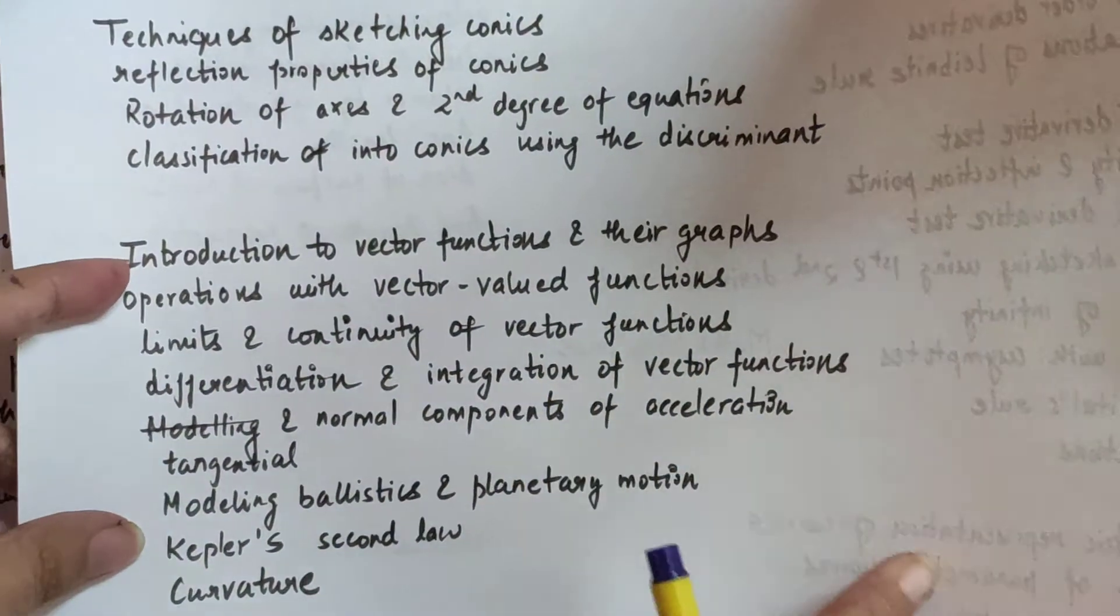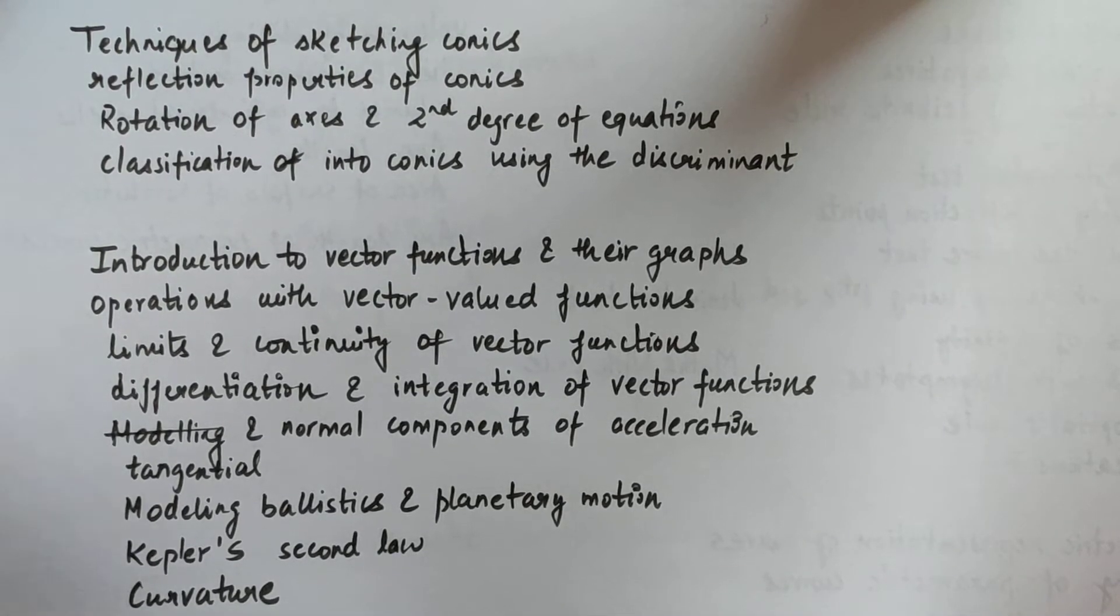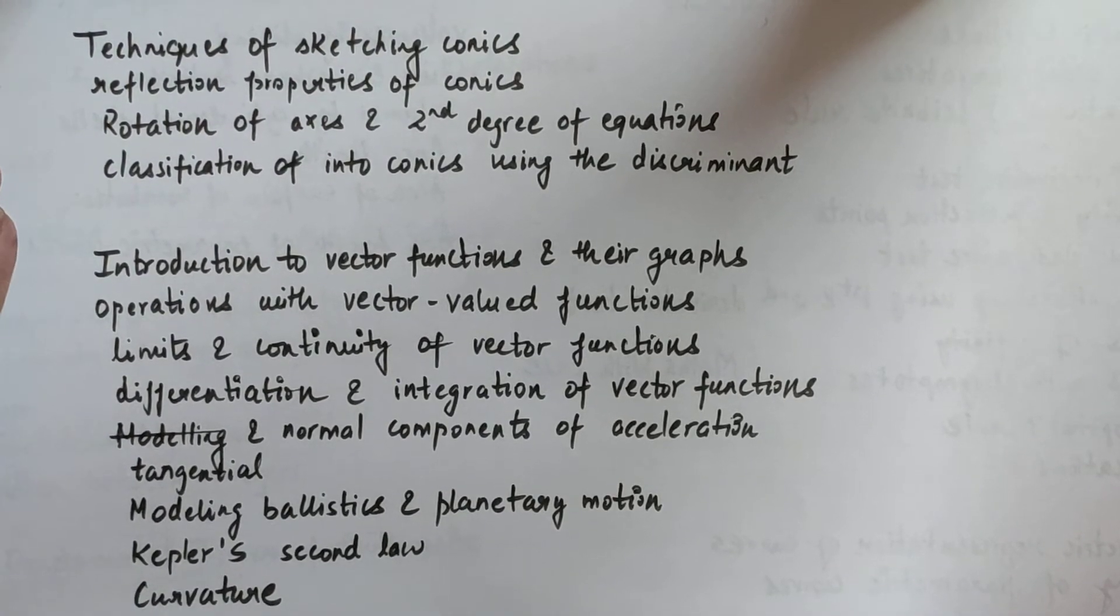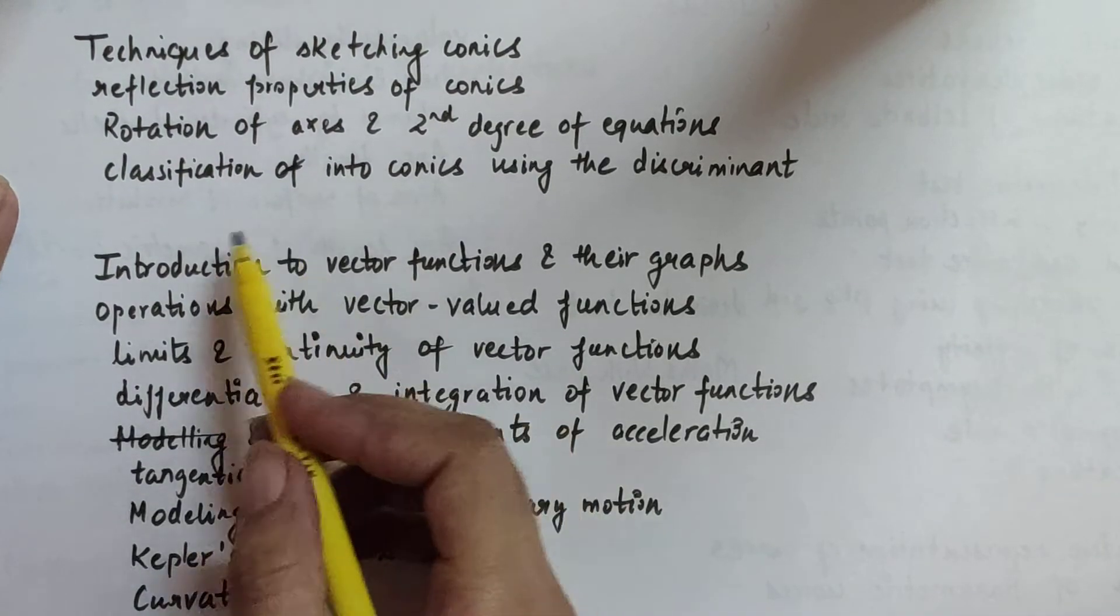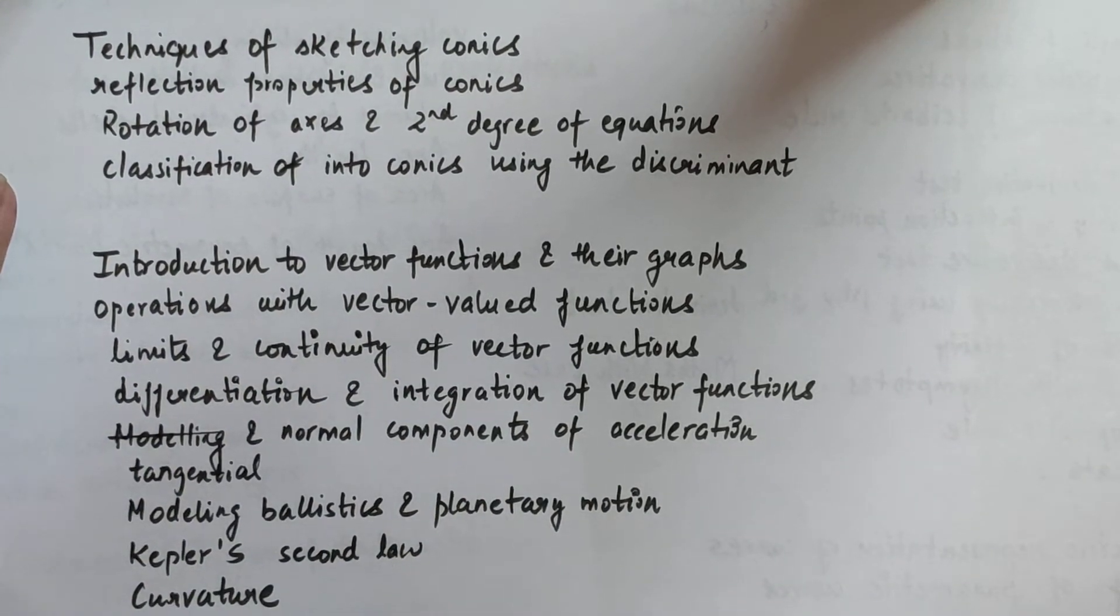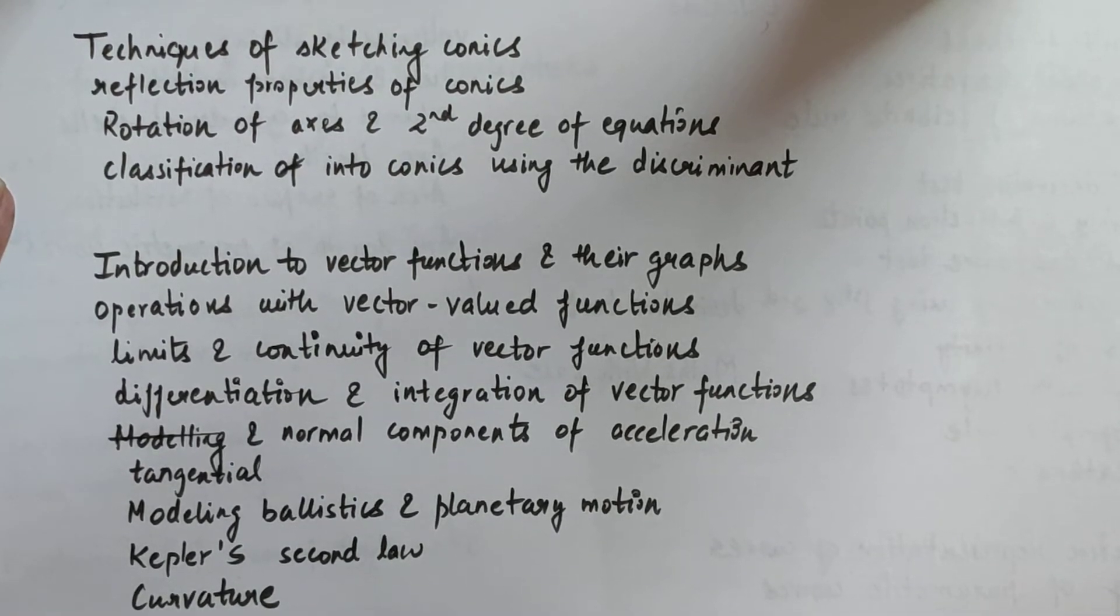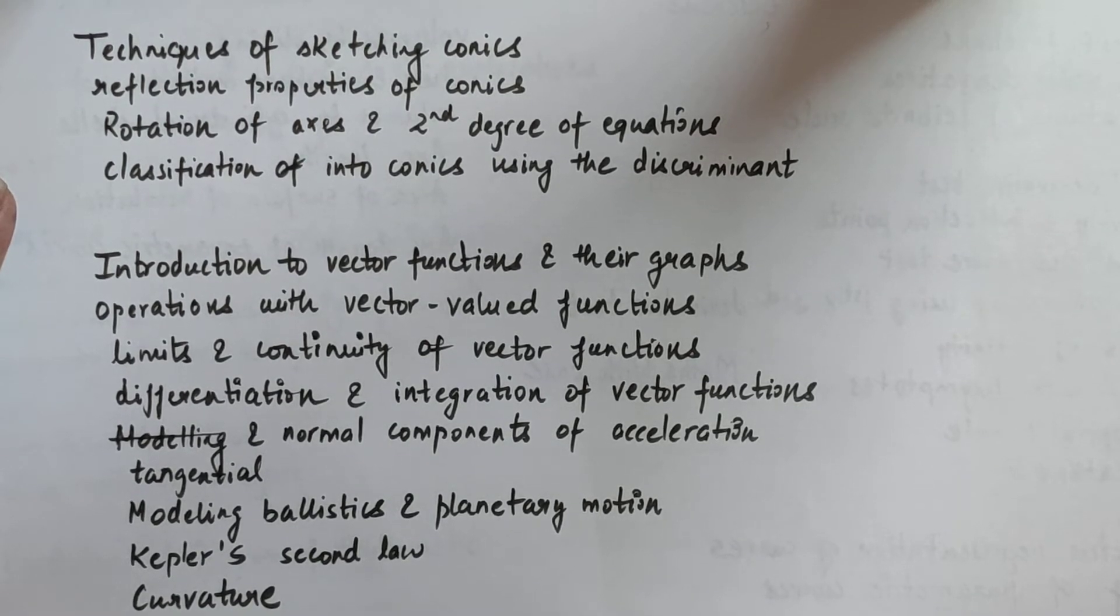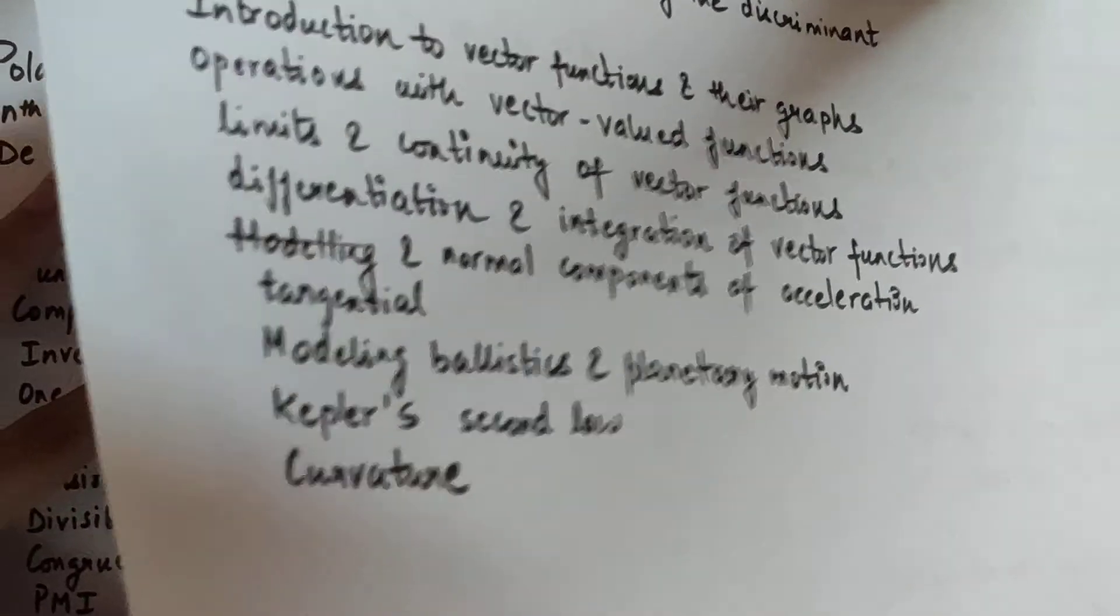Let's move on to a few more sections. You can also take a screenshot of this page, the second page of the Calculus syllabus. It consists of topics like techniques of sketching conics, reflection properties of conics, rotation of axes and second degree equations, classification into conics using the discriminant. Coming to the last section, it consists of topics like introduction to vector functions and their graphs, operations with vector-valued functions, limits and continuity of vector functions, differentiation and integration of vector functions, tangential and normal components of acceleration, modeling ballistics and planetary motion, Kepler's second law and curvature. This was all about the topics of the Calculus subject.